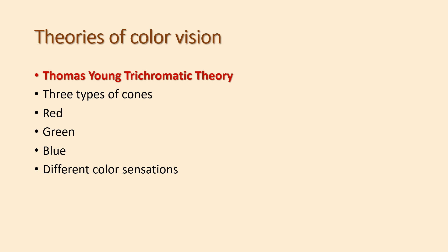The red, green, and blue cone combinations produce different types of color with different concentrations. For the perception of white color, all three types of cones are stimulated equally to perceive the sensation of white light.